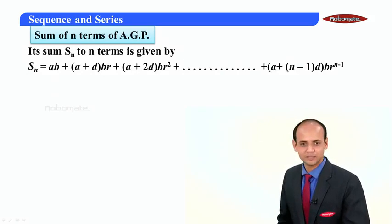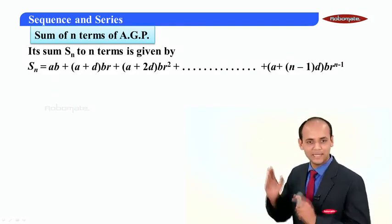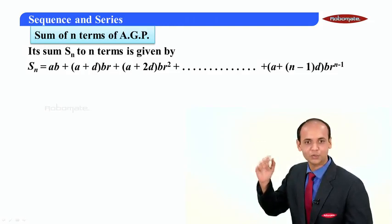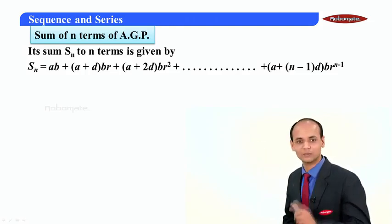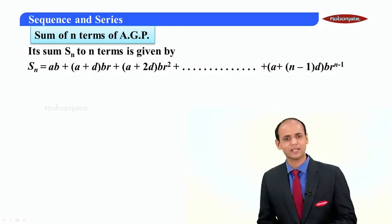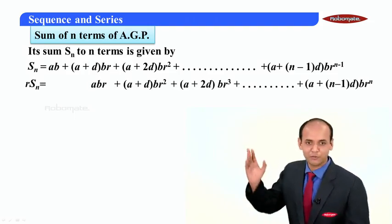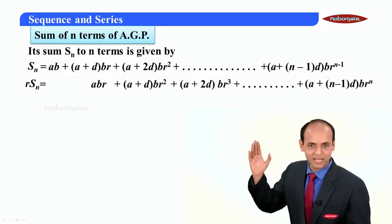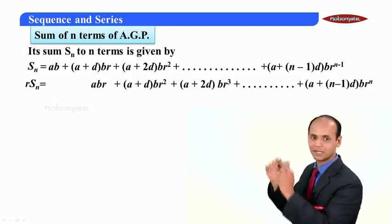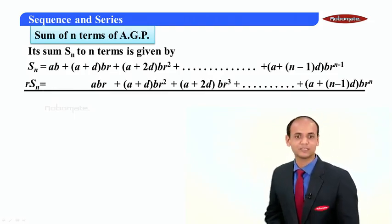A very important step here is that I am going to multiply the complete series by the common ratio of the GP, as we used to do in the GP topic — that is geometric progression. So I am multiplying the complete series by R, the common ratio, and shifting the terms accordingly.